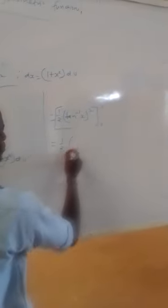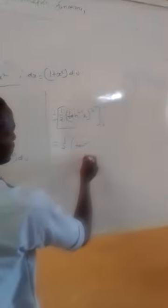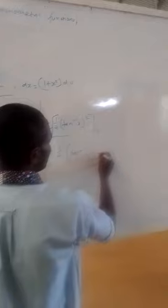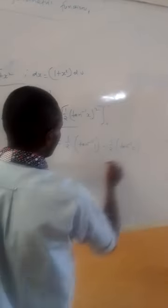Putting in the upper limit will be one-half times tan inverse of 1. That is the upper limit. Minus one-half times tan inverse of 0. This is the lower limit.